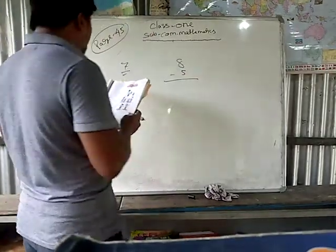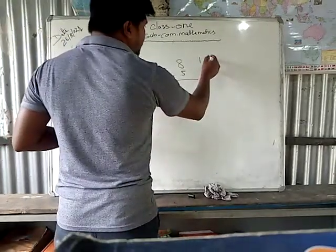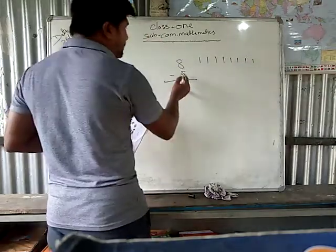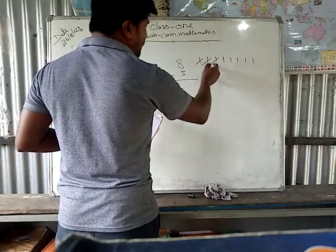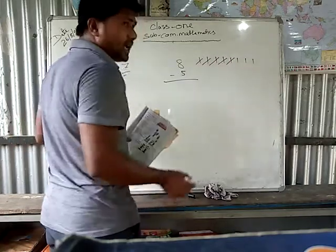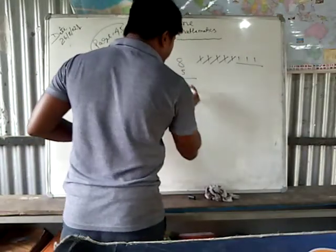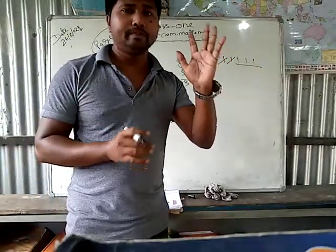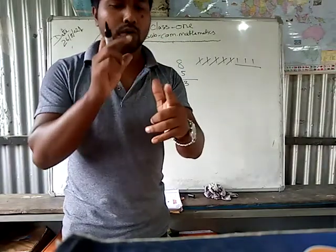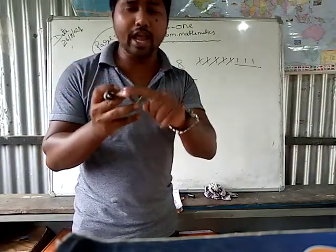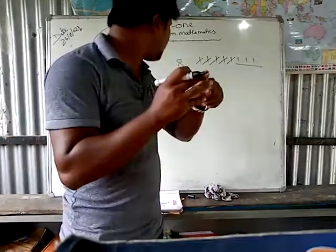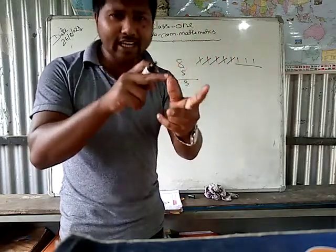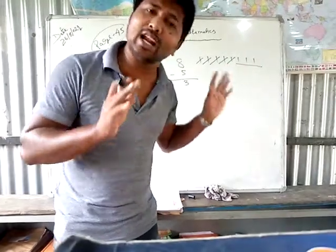Now, together — how many are without a stamp? I draw 8 letters: 1, 2, 3, 4, 5, 6, 7, 8. Out of these 8, I cross out 5 with stamps: 1, 2, 3, 4, 5. Now, how many are left? 1, 2, 3. So 3 letters are without a stamp. You can count and write. Clear?